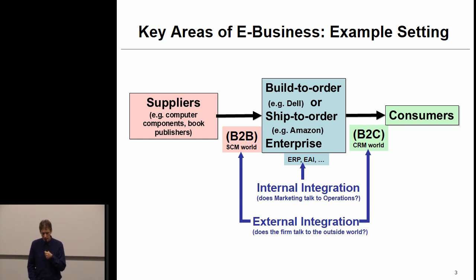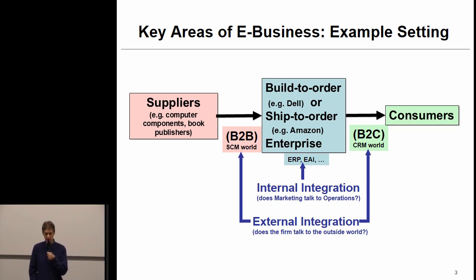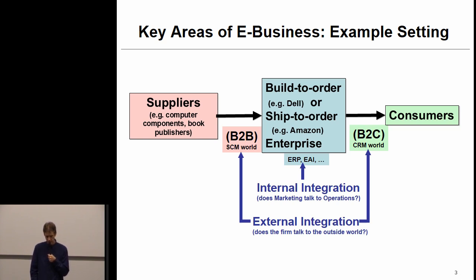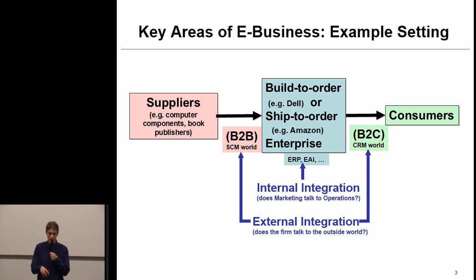Here's the setting we're going to use as a framework. Companies can operate according to a built-to-order philosophy, like Dell, whereby products are built as they are ordered by customers, or according to a ship-to-order philosophy. Remember that every company has two sides: a B2C side, which is the interface to consumers, and a B2B side, which is the supply chain management side — the interaction with the suppliers.